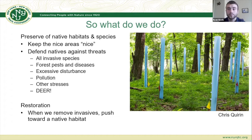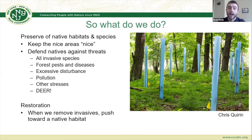As a regional strategy we target emerging invasives to prevent them from becoming more widespread, while also preserving native habitats and rare and threatened species. We defend natives against threats including invasive species, forest pests and diseases, excessive disturbance, pollution, and deer — which have a huge negative impact on native species because deer avoid eating invasives but love eating native seedlings, causing significant regeneration problems in our forests. When we remove invasives, we push toward a native habitat through either passive restoration — removing invasives and watching for native seed banks to recover — or active restoration by planting plugs or scattering seed.